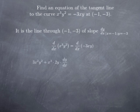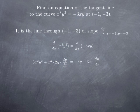On the left-hand side, I have a product, so I use the product rule. The derivative of the first factor x cubed is 3x squared, multiplied by y squared unchanged. Then x cubed unchanged, multiplied by the derivative of y squared — which, by the chain rule, is 2y dy/dx. On the right-hand side, similarly, I have a product, so I use the product rule: negative 3 times the derivative of x, which is 1, multiplied by y gives negative 3y, and then negative 3x multiplied by the derivative of y.